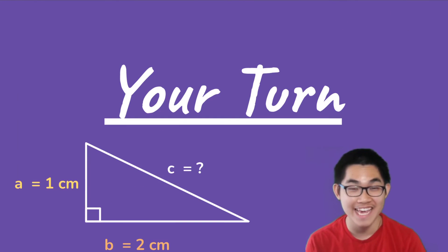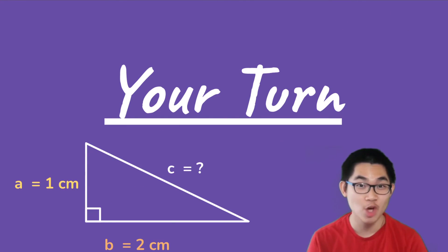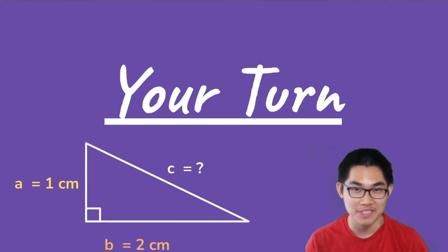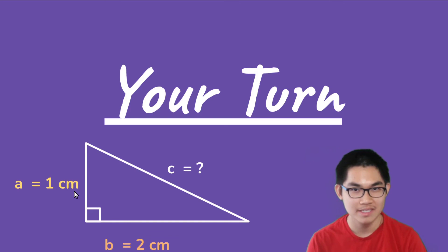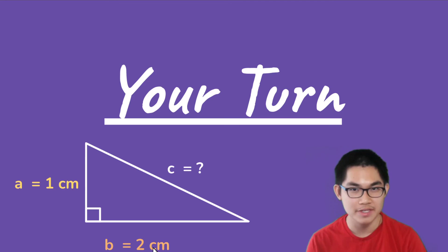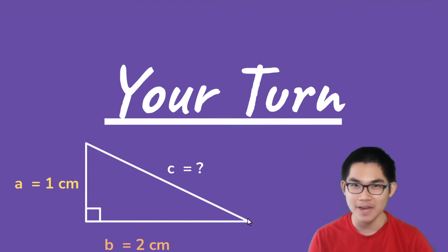That is it for today. Thank you so much for watching this video. Now, I would like you to try one yourself. So here we have a right triangle. We know that a is 1 centimeter and b is 2 centimeters. So what is c? Find it and then put down your answer in the comment section below.